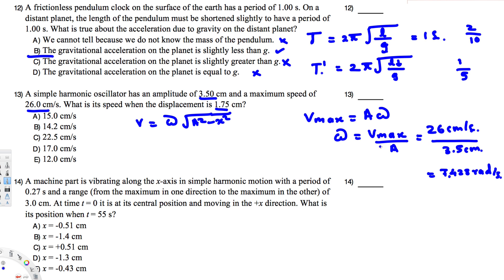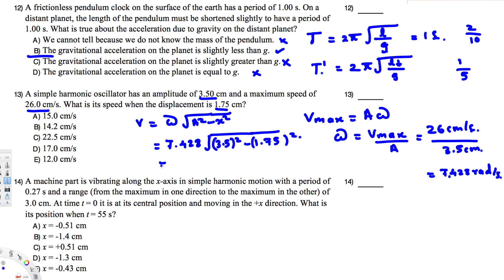Now we have omega and can plug into the velocity equation. Since everything is in centimeters per second, no unit conversion is needed. Plugging in: v = 7.428 × √(3.5² − 1.75²). Calculating this gives 22.5 centimeters per second. So the answer is C.